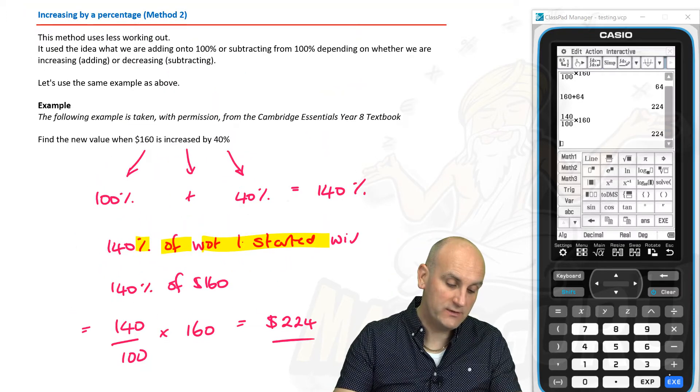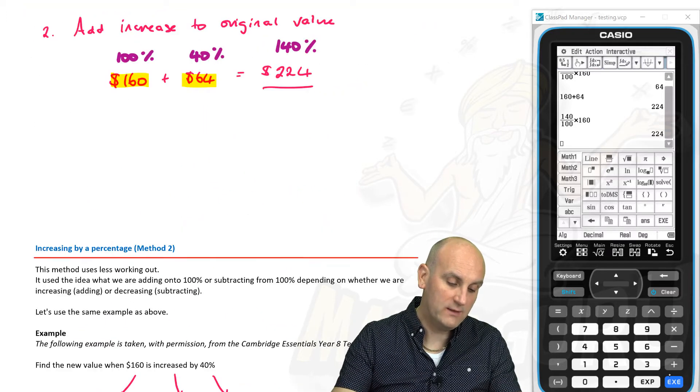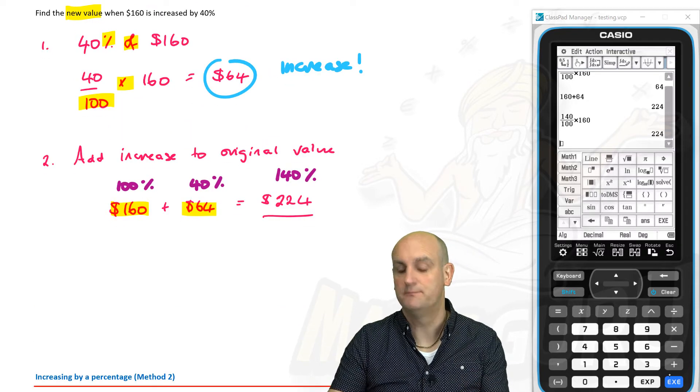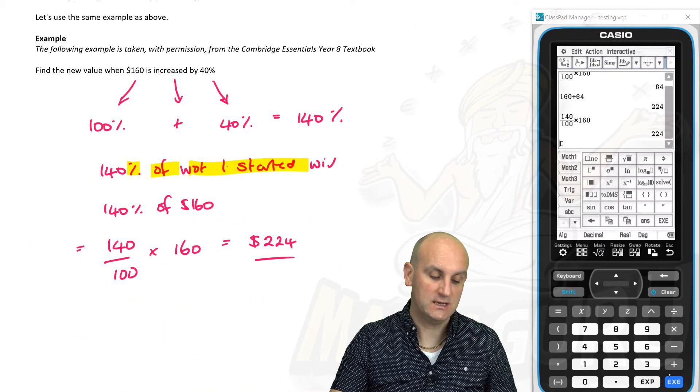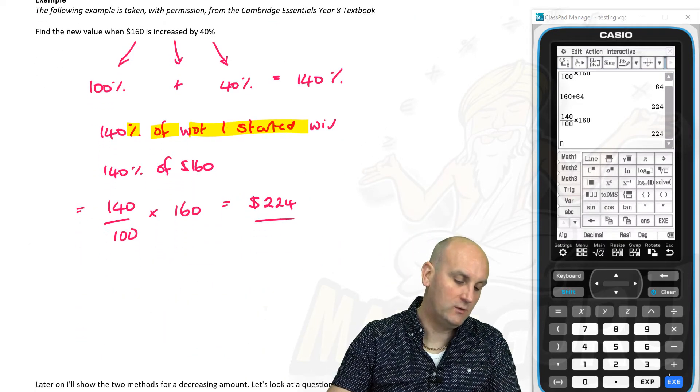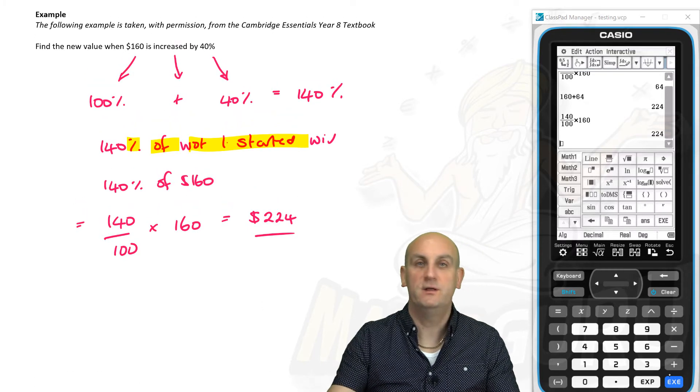Now, if we compare these two methods together, while they both got the same answer, how many calculations did you have to do in the first way? Two. How many calculations did you do in the second way? Just the one. Now, obviously, it's going to try and trick you. I, personally, much prefer this way of doing it.